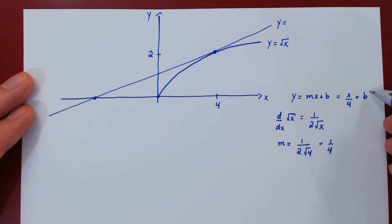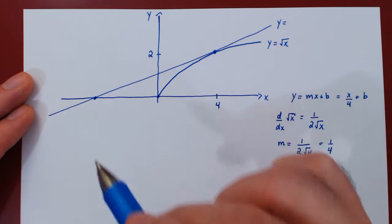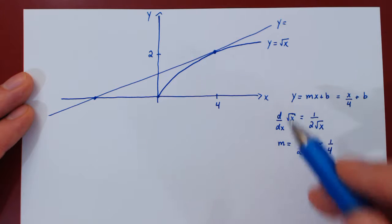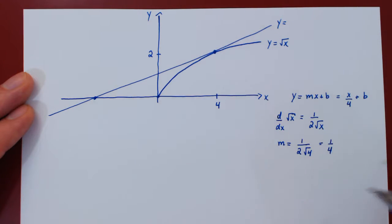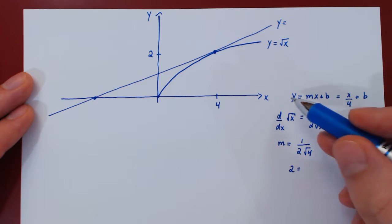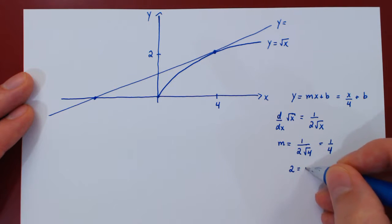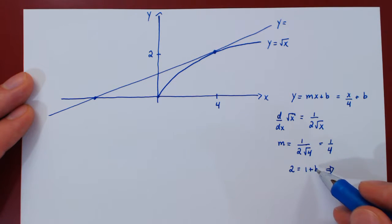To find the constant term b, we use the fact that the tangent line passes through the point x equals 4, y equals 2. Substituting in: 2 equals 4 over 4 plus b, so 2 equals 1 plus b. Subtracting 1, b equals 2 minus 1, which is 1.